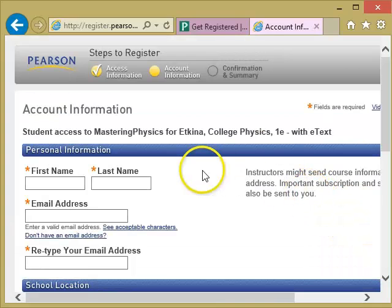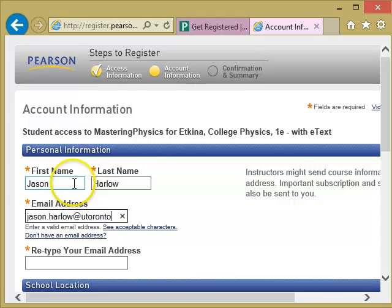So the next screen is account information. The first question it asks is first and last name. And could you please put in your first and last name as per ROSI, or your official first and last name. Don't use a nickname here. Next, it asks for email address. Again, please use your uToronto email address. You type it twice.